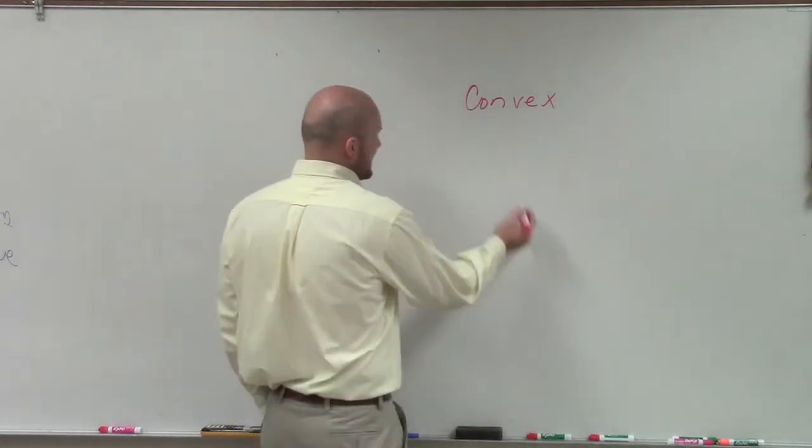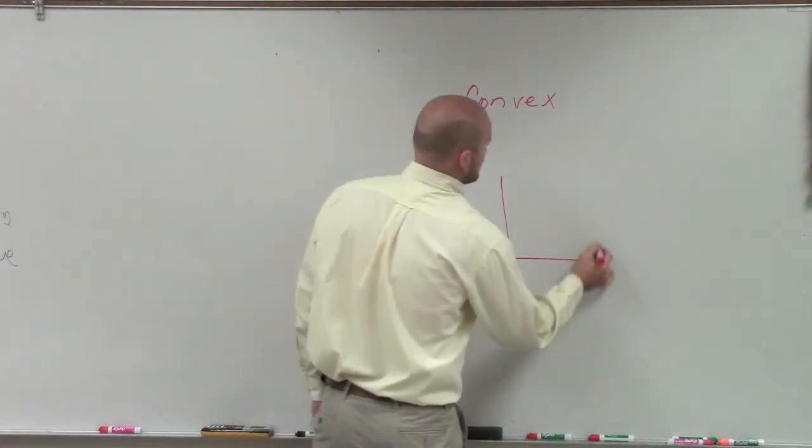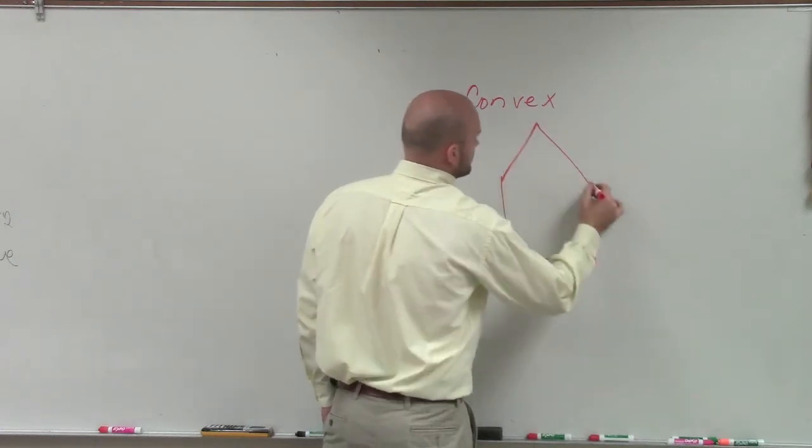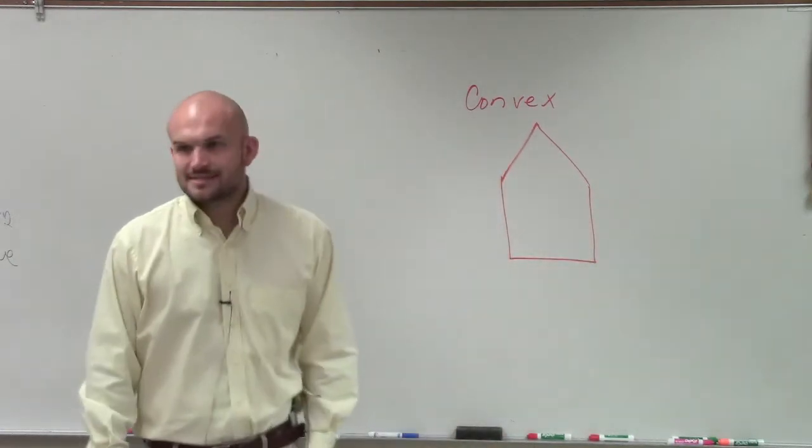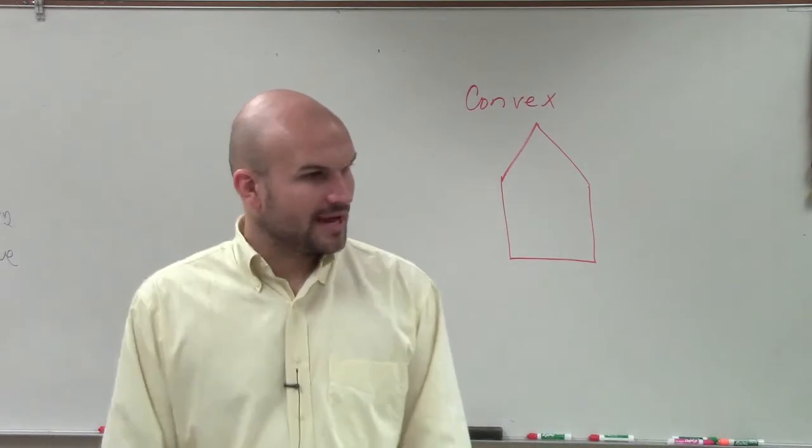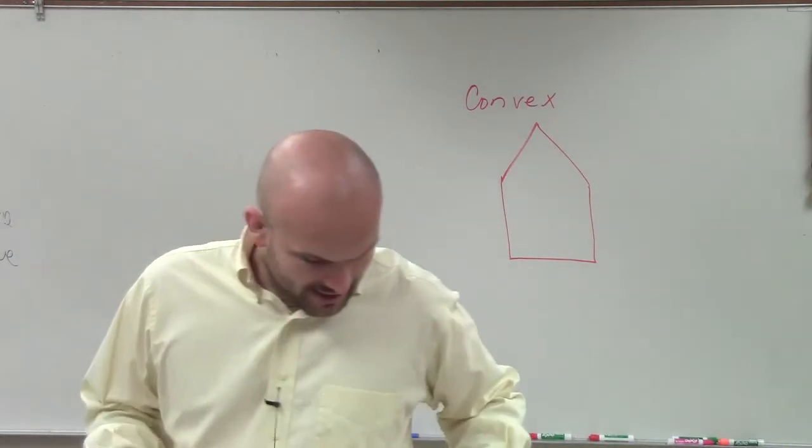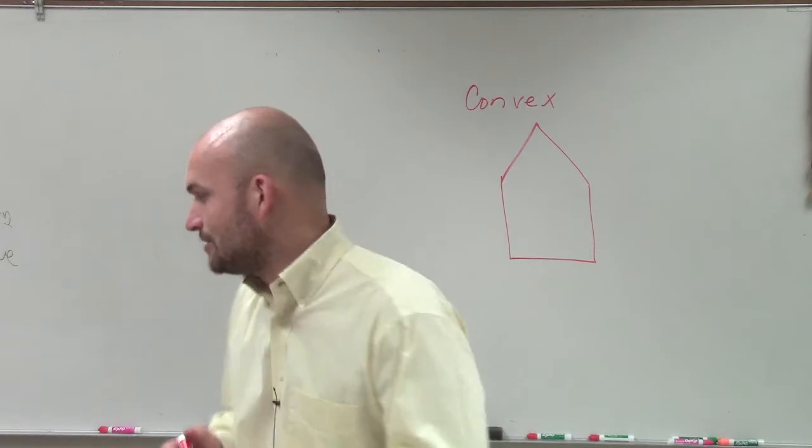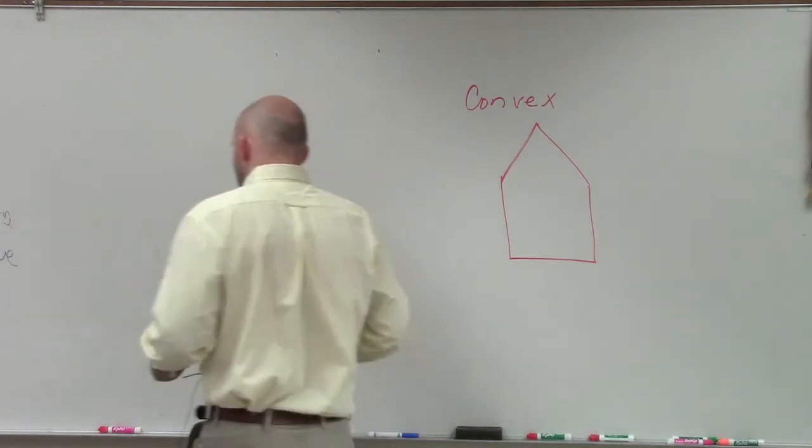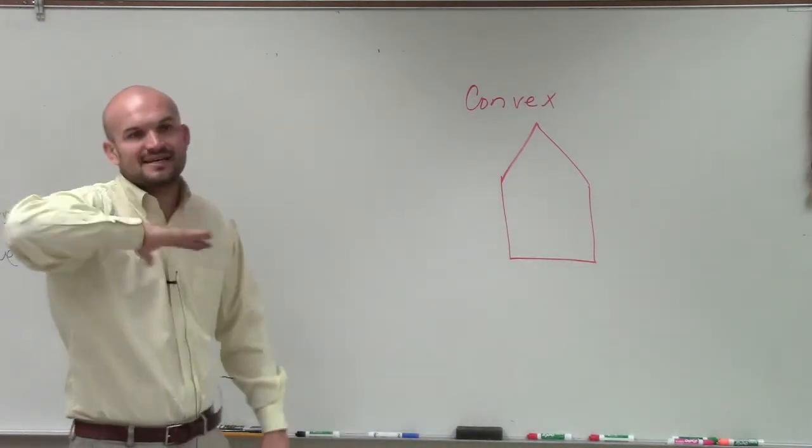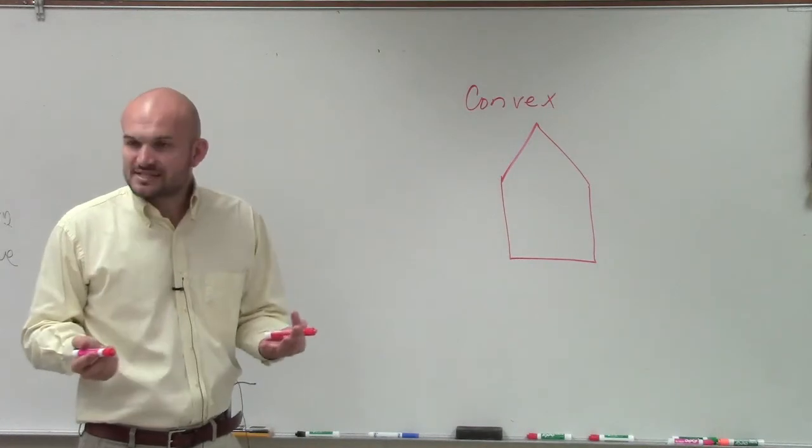If I was looking at a convex polygon, let's look at this little pentagon - looks like a house. Now on a convex polygon, what we're going to do, kind of like when we were talking about exterior angles - we said extend the lines that make up the sides.